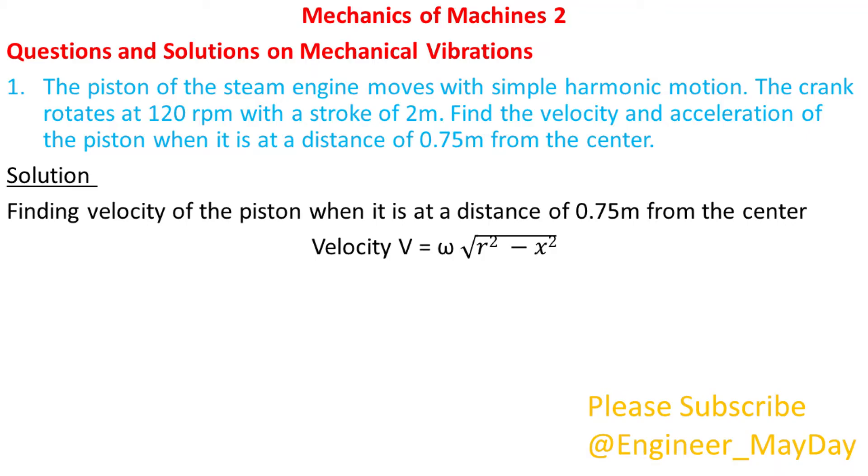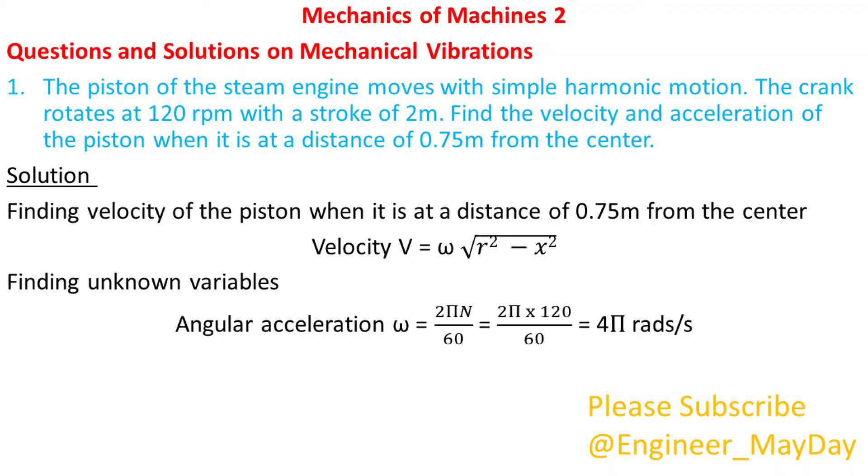As you can see we have some unknown variables. Finding unknown variables. Angular velocity omega is equal to 2π n divided by 60, which gives us 4π radians per second. Note that we divided by 60 to convert RPM to revolutions per second.